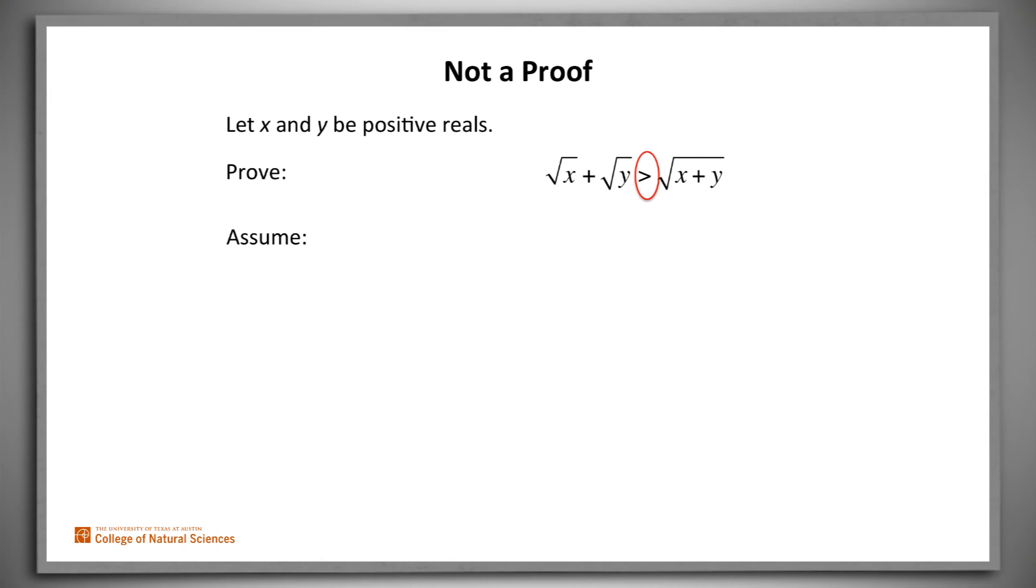So we begin by assuming our desired claim, not its negation. In this case, just a single symbol is different. We assume that the square root of x plus the square root of y is greater than the square root of x plus y.